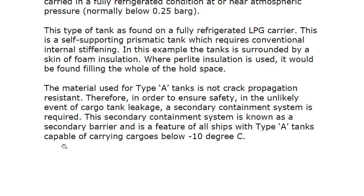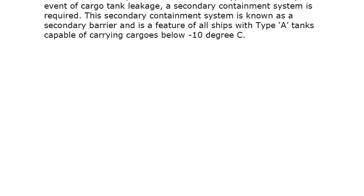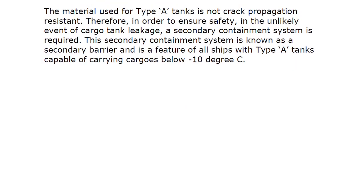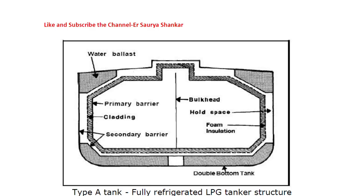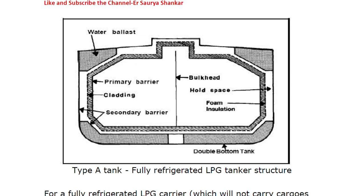Type A tanks are capable of carrying cargoes below minus 10°C. In this diagrammatic representation, we can see the primary barrier and secondary barrier of the Type A tank. The ship's hull acts as the secondary barrier in this type. Also visible are the bulkhead, the foam insulation, ballast tanks, double bottom tanks, and wing tanks.